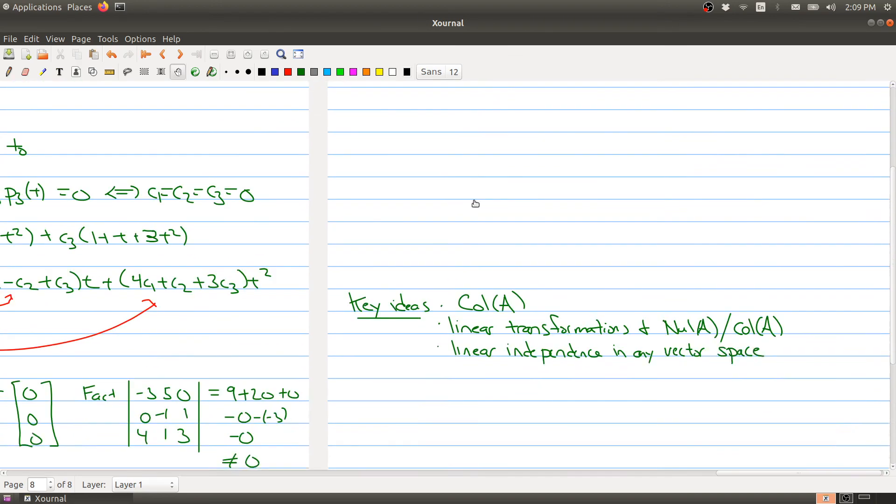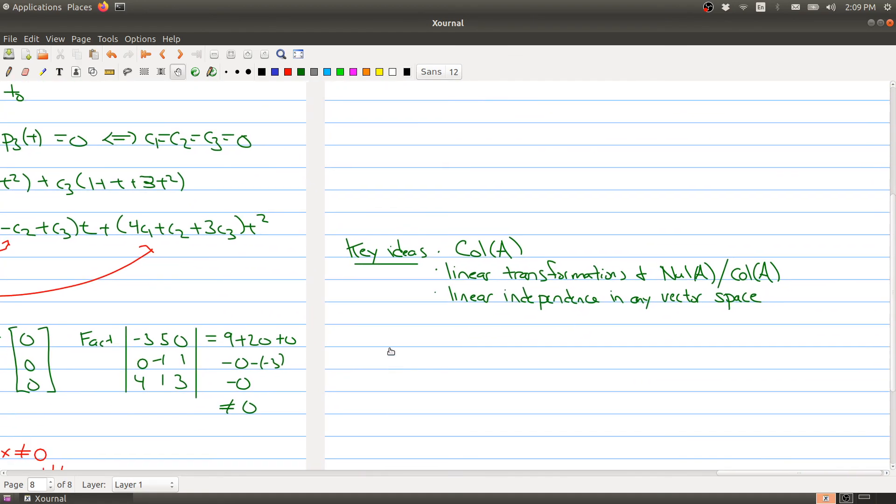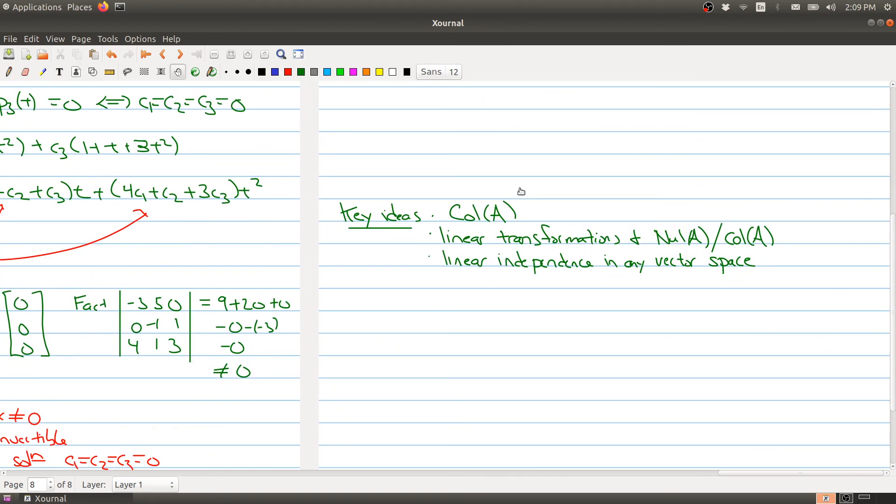So to kind of summarize from today's lecture, there are a lot of key ideas. One of the things that we learned is about a new subspace attached to a matrix, namely the column space. We learned how the null space and the column space are related to linear transformations. And we introduced linearly independence for any vector space. So that's it for today's lecture and I will see you in lecture 22. Have a great day.